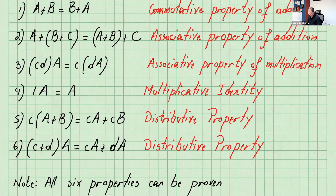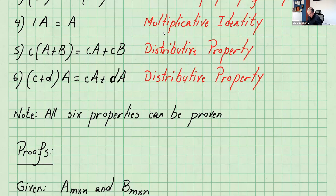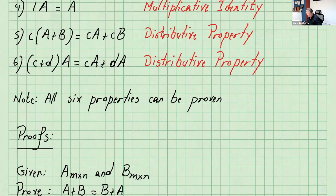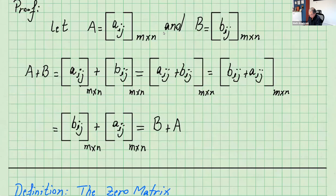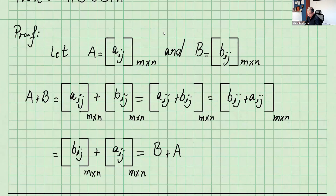These are all theorems, so all six properties can be proven. Let me go over one of them. Given A is an m by n matrix and B is an m by n matrix, prove that A plus B equals B plus A. When proving properties of matrices, it's a good idea to use the compact form. So write A as a_ij and B as b_ij, both m by n matrices.